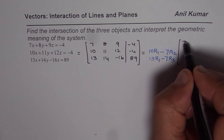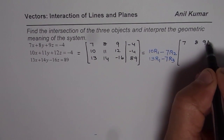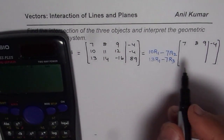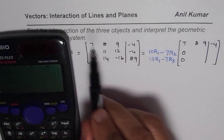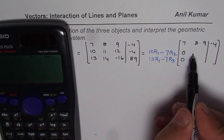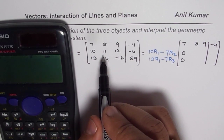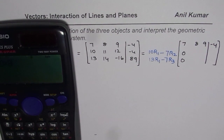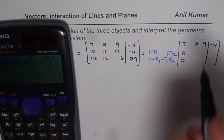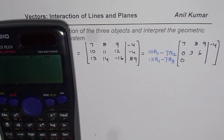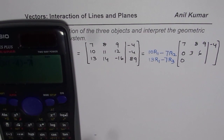You can use a calculator for these calculations. The first row stays the same: 7, 8, 9, minus 4. For the second row, the first two entries become zero. Then 10 times 8 minus 11 times 7 gives 3; 10 times 9 minus 7 times 12 gives 6; and 10 times minus 4 minus 7 times minus 4 gives minus 12.